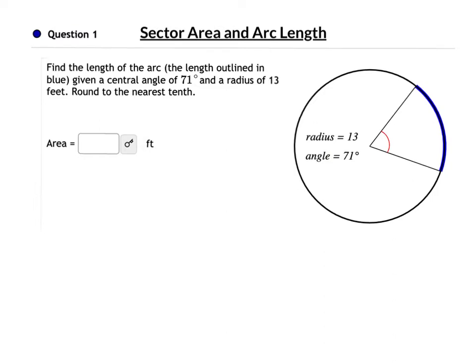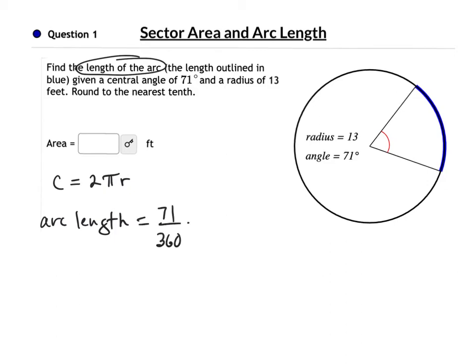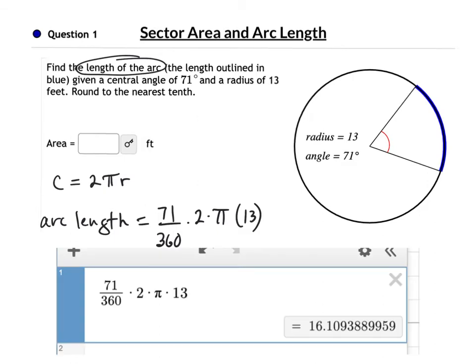Here are some example questions. Find the length of the arc outlined in blue, given a central angle of 71 degrees and a radius of 13 feet. We're doing the length of the arc, which means we're talking about circumference — 2 pi times the radius. The arc length will be 71 over 360 times 2 times pi times the radius of 13. Putting this in Desmos, to the nearest tenth we get about 16.1 feet. Only area is measured in squares, so our label here is feet.